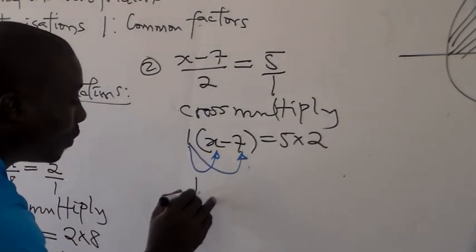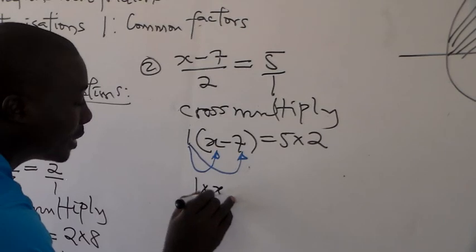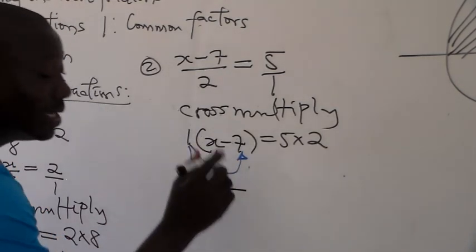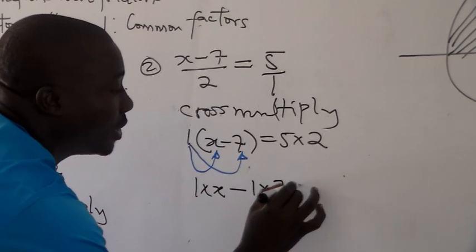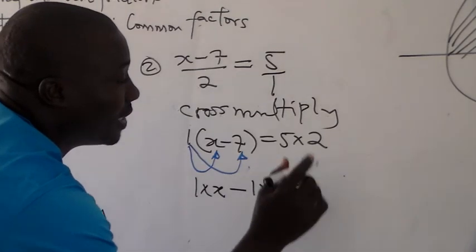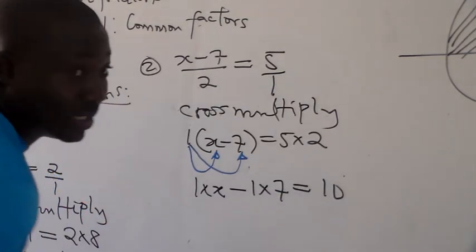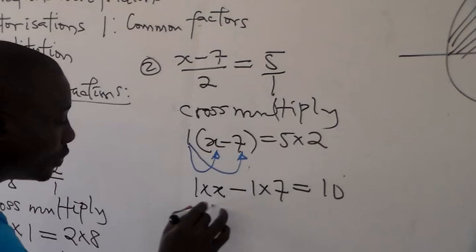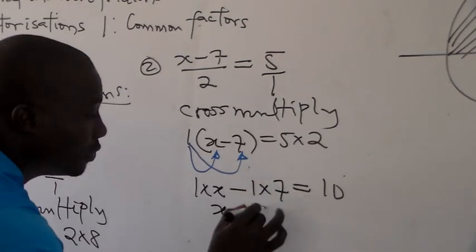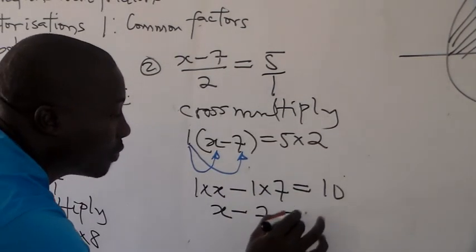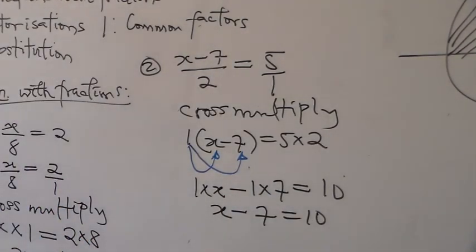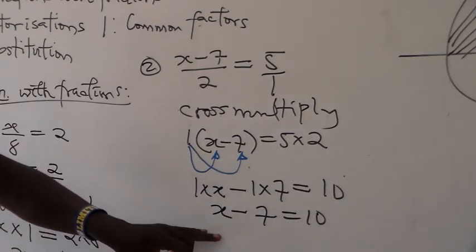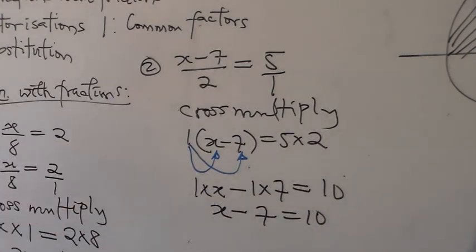In opening the bracket, because inside the bracket we have a binomial — two terms — we multiply the value outside the bracket by each individual term inside. So we have 1 times x, giving us x, and then negative 1 times 7, giving us negative 7, equal to 5 times 2, which gives us 10. So we have x minus 7 equals 10. What we are solving for is the value of x, so at this point we collect like terms.